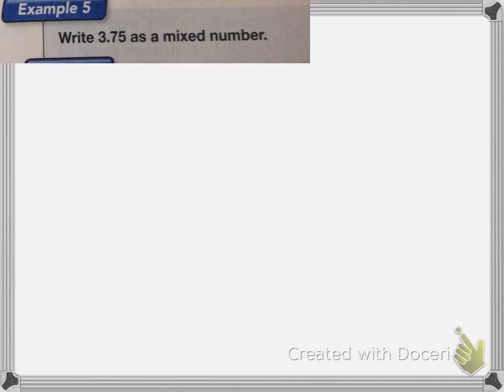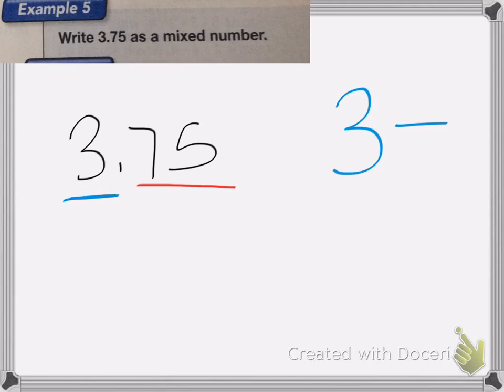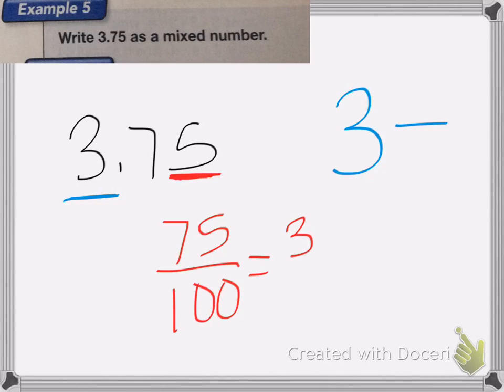On this one, we have 3.75 as a mixed number. Well we know that the 3 is a whole number. So I know I'm going to have 3 and then some fraction. So then we look at my fraction. We have 75, and the 5, you look at the last number to know what place value it's in. So it's 75 hundredths, because this is the hundredths place value. So it's 75 hundredths, which we need to reduce. 75 hundredths, we reduce down to 3 fourths. So 3.75 is the same as 3 and 3 fourths. And that's it. Good luck on your homework.